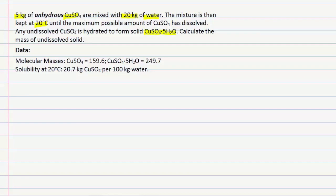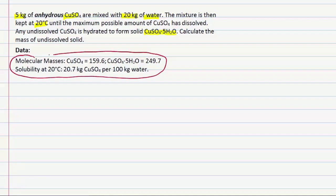To help us answer this question, we're given some extra data about the molecular masses of copper sulfate and the 5-hydrate form, and we're also told about the solubility of copper sulfate in water at 20 degrees Celsius, which is the temperature that this process is operating at as posed in the question.